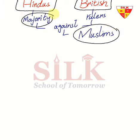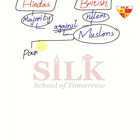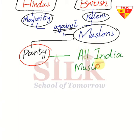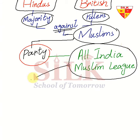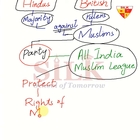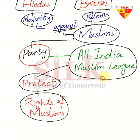This is what we studied. In this situation, there was a party that felt the need to protect the rights of Muslims. So they built a party that called all India Muslims. What was this party? This party was made by Muslims to protect the rights of Muslims.